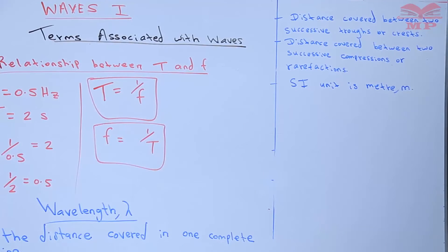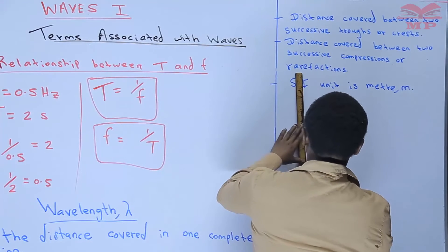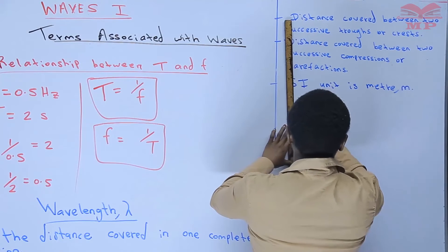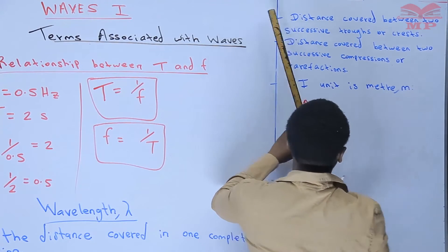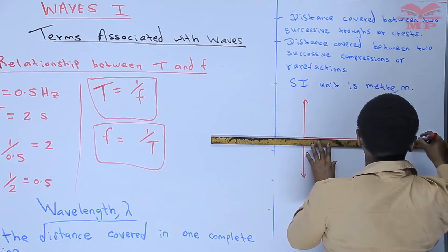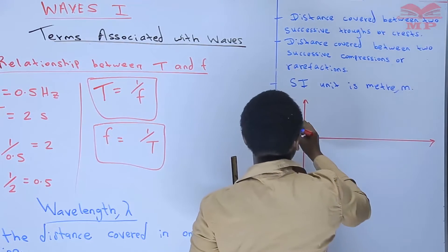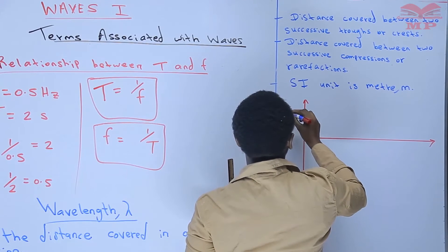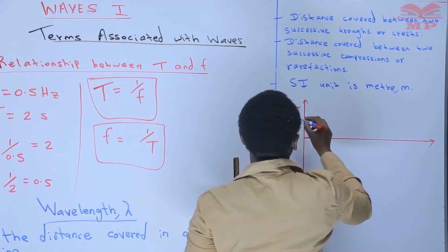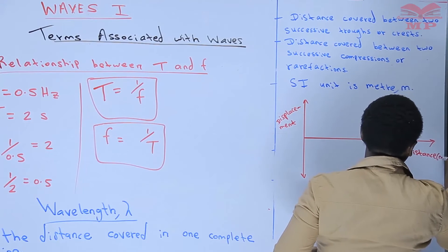So I want us to consider this wave. Here we are having a transverse wave. It can be seen that the vibration of particles is at right angle to the direction of wave travel. So these are transverse waves. Here we have displacement, and here we have distance.